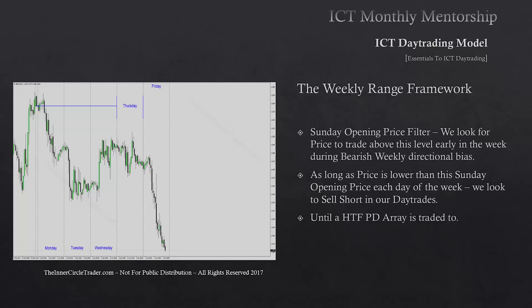The caveat is until a higher timeframe PD array that's contrary to how our trade is unfolding is traded to. If we're looking for bearish ideas and expecting the weekly candle to close lower than it opened on Sunday, as long as we are trading below Sunday's opening price, we're looking to sell short every single day in London and continuation in New York. But this is only true while we're below the Sunday opening price — and only until we trade to a higher timeframe discount PD array.